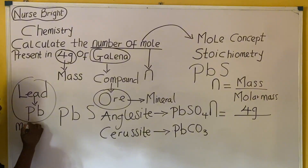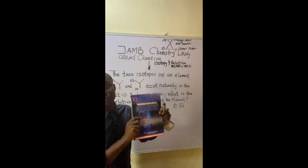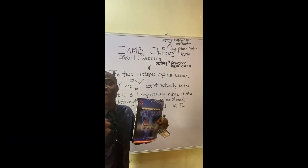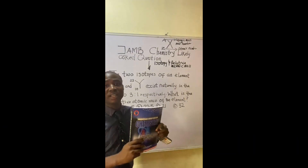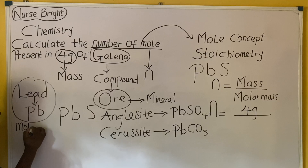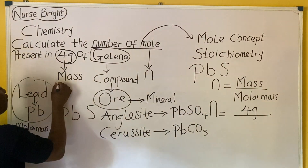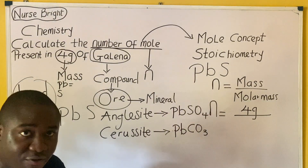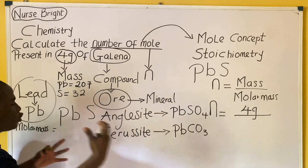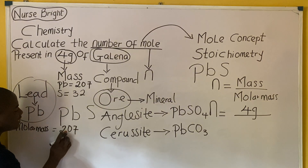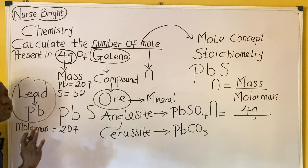PbS — how do we calculate molar mass? The elements involved are lead and sulfur. In most questions you'll be given, lead's atomic mass is 207 and sulfur's atomic mass is 32. Since there is just one lead atom, we write 207. We add the atomic masses — we don't subtract or divide, we add. So it's 207 for lead, plus 32 for sulfur.